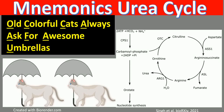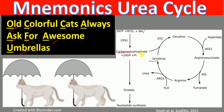Mnemonics for the urea cycle: old colorful cats always ask for awesome umbrellas. Look at these cats — they are old and they are asking for umbrellas. 'Old' O refers to ornithine, 'colorful' C refers to carbamyl phosphate, 'cat' C refers to citrulline.